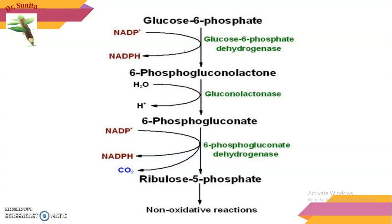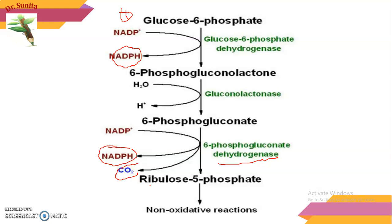This is the summarization of the oxidative phase. Glucose-6-phosphate undergoes oxidation with the help of glucose-6-phosphate dehydrogenase to form 6-phosphogluconolactone, producing NADPH. This undergoes hydrolysis with the enzyme gluconolactonase to form 6-phosphogluconate. This then undergoes oxidation to form ribulose-5-phosphate, catalyzed by 6-phosphogluconate dehydrogenase, forming a second molecule of NADPH. So during this oxidative phase, 1 glucose molecule forms 2 NADPH, 1 CO2, and 1 ribulose-5-phosphate.